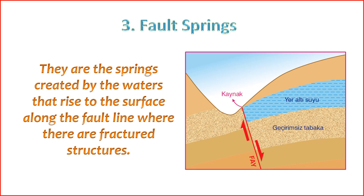2. Water Source — the water that feeds fault springs often comes from underground aquifers or permeable rock layers that intersect the fault zone. The fault provides a conduit for the water to reach the surface. 3. Temperature and Composition — the temperature of water from fault springs can vary, and the composition may depend on the rocks the water interacts with along its underground journey. In some cases, fault springs can have unique mineral content due to the geological characteristics of the fault zone. 4. Geological Activity — fault springs are associated with geological activity and the movement of tectonic plates. They are often found in regions with active fault lines, where earthquakes and other tectonic processes contribute to the creation of faults.